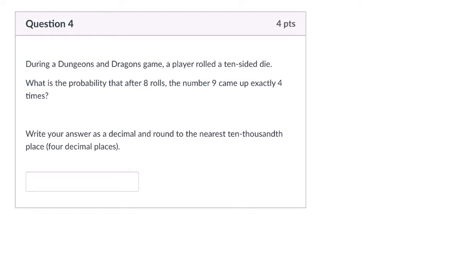Alright, so we've got a problem here about a Dungeons & Dragons game, and they're rolling a 10-sided die. What is the probability that after 8 rolls, the number 9 came up exactly 4 times?